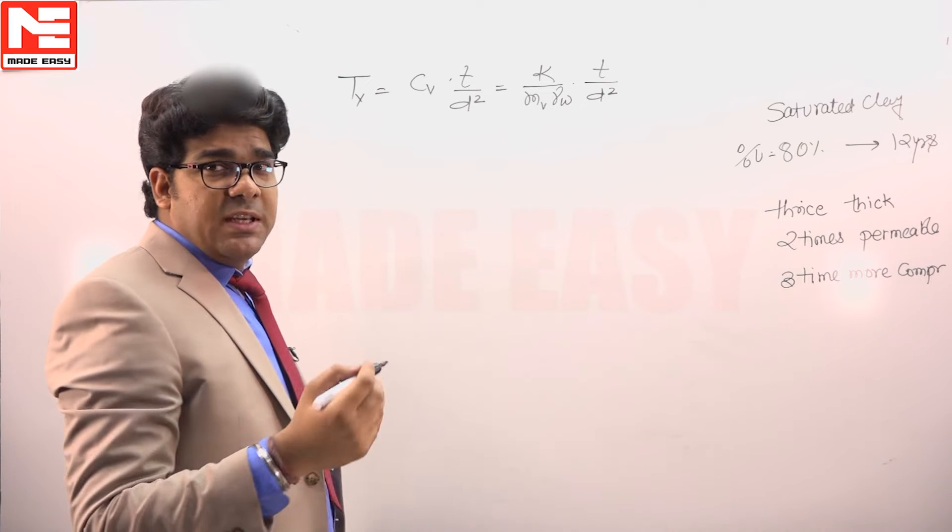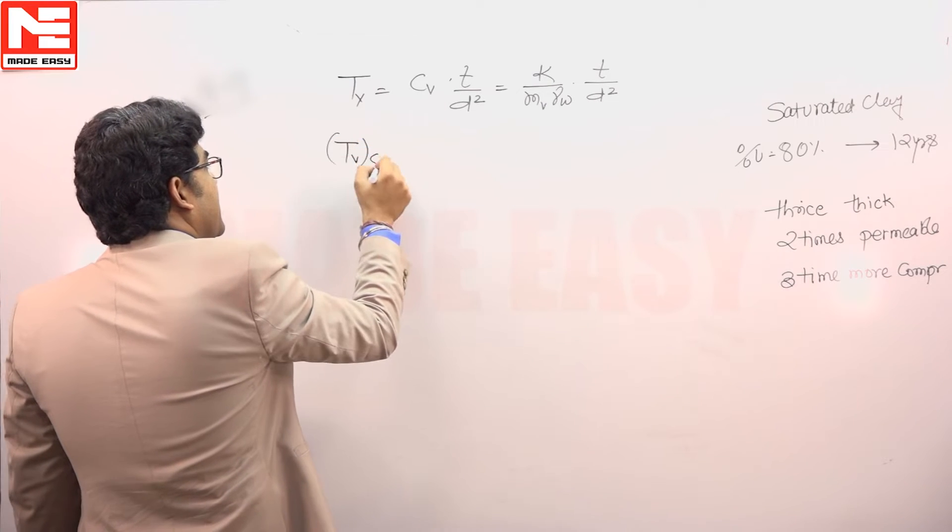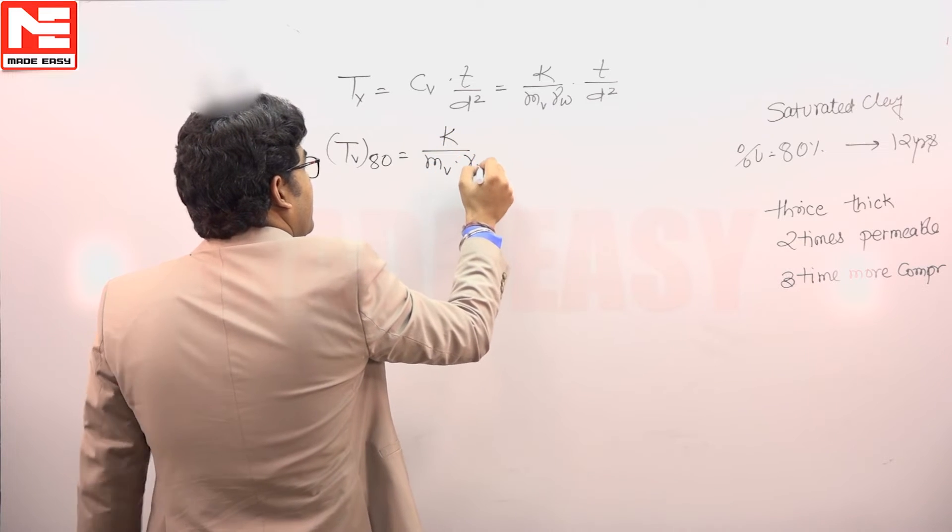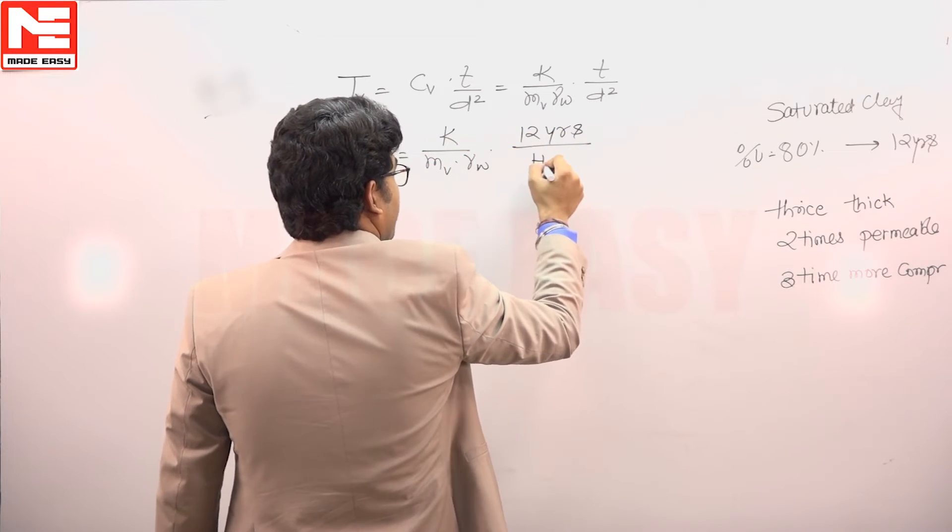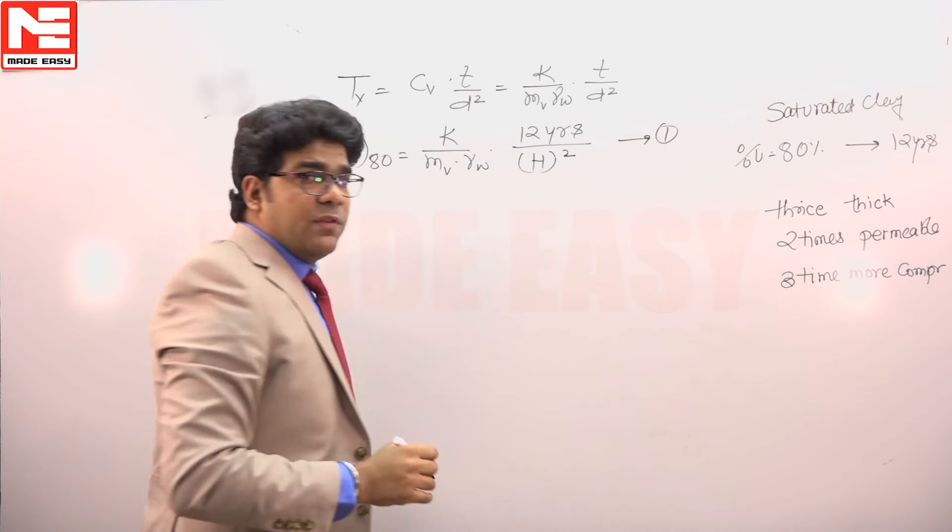In the first situation, suppose D is equivalent to H. For TV at this, CV is equivalent to K upon MV gamma W into T is 12 years, and this D is H, so this is H squared. This is relation number 1 in the first condition.